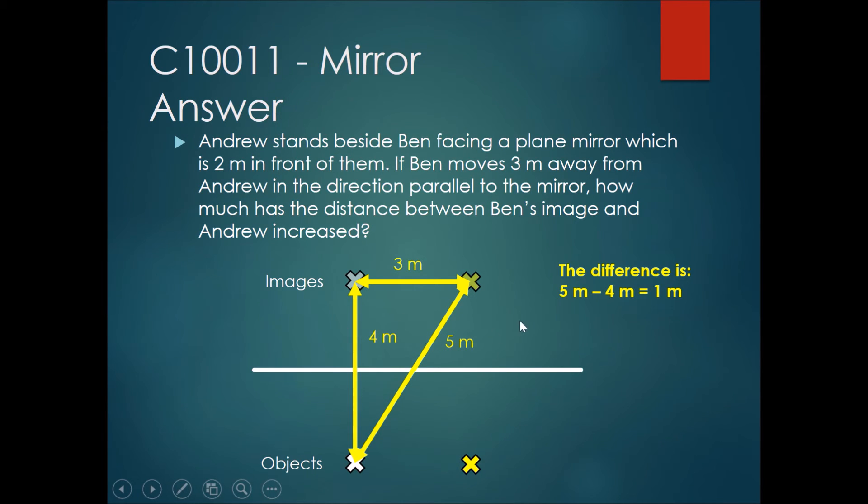The difference between these two distances is 5 meters minus 4 meters, equals 1 meter. The increase in distance between Ben's image and Andrew is 1 meter.